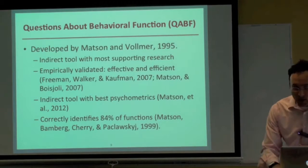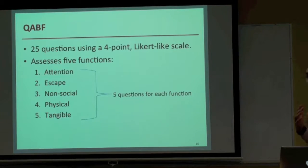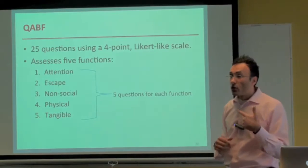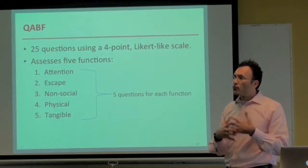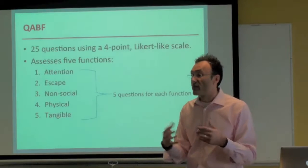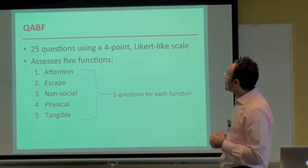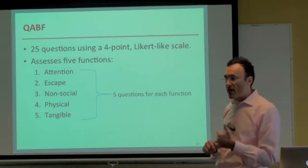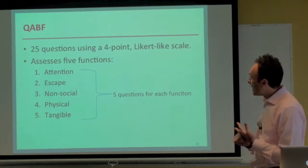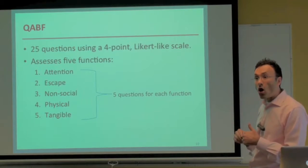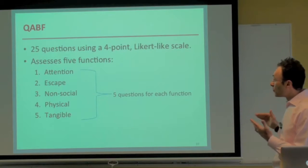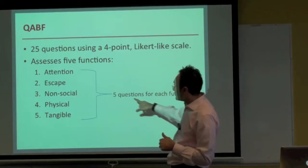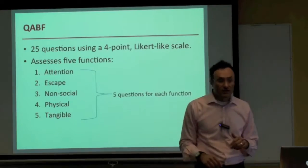The QABF has 25 questions. The interviewer interviews a respondent who knows the participant for at least six months and regularly observes the problem behavior. It uses a 4-point Likert-like scale and assesses five functions: attention, escape, non-social (their wording for automatic positive reinforcement), physical (automatic negative reinforcement), and tangible. There are five questions for each of the five functions, so 25 questions in total.